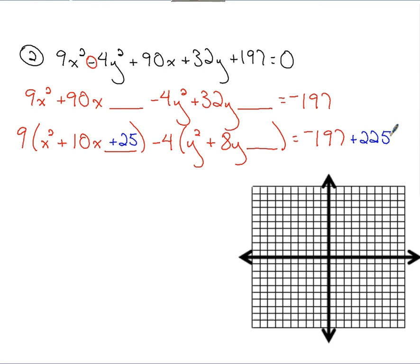For the y's, I'm taking half of this 8, squaring that. So 4 squared gets 16. Again, I'm not adding 16 on. What I'm really doing is I'm adding on negative 4 times 16. So that's negative 64. I have to subtract 64 over here.